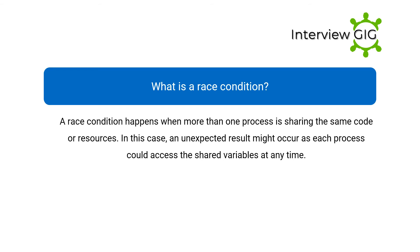What is a race condition? A race condition happens when more than one process is sharing the same code or resources. In this case, an unexpected result might occur as each process could access the shared variables at any time.